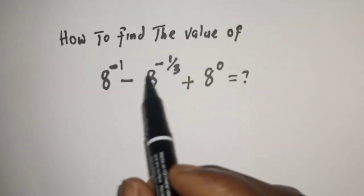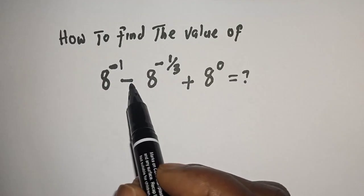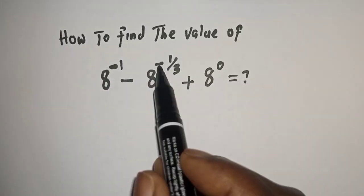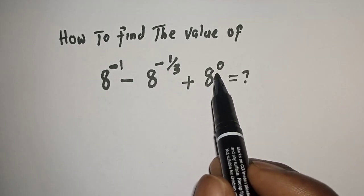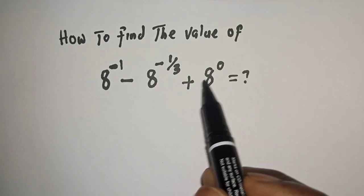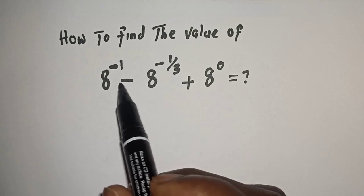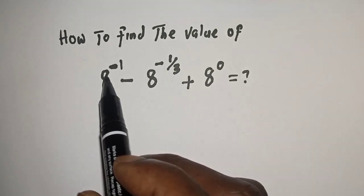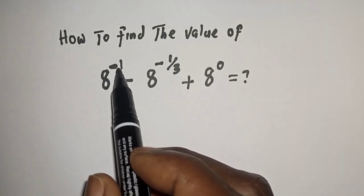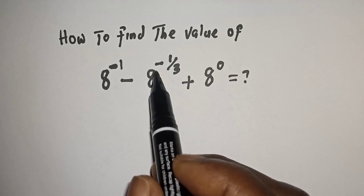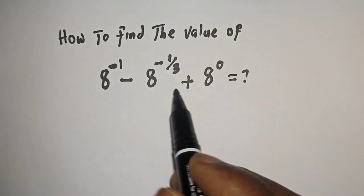How to find the value of 8 raised to power minus 1, minus 8 raised to power minus 1 over 3, plus 8 raised to power 0. Hi everyone, welcome to my class. In this class we want to evaluate this math problem: 8 raised to power minus 1, minus 8 raised to power minus 1 over 3, plus 8 raised to power 0.